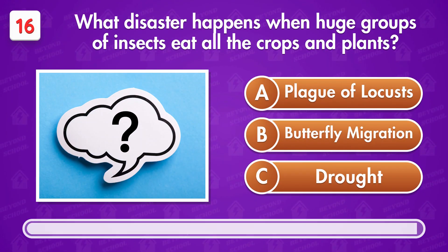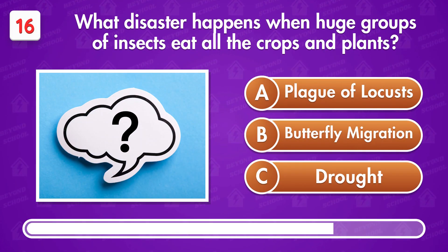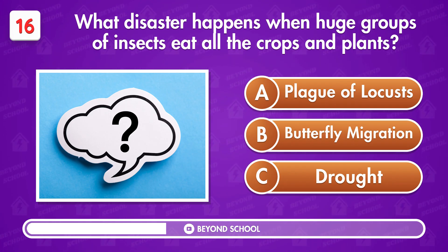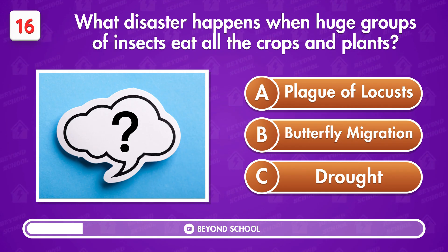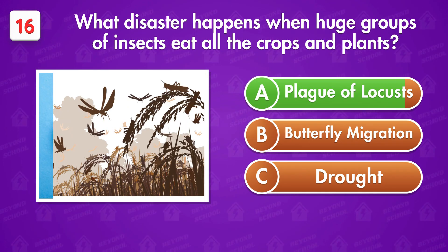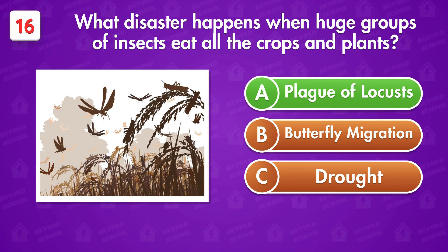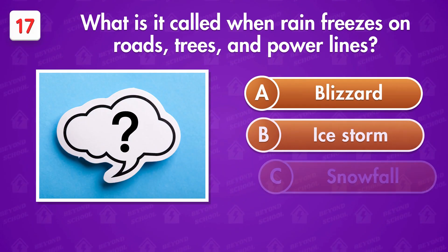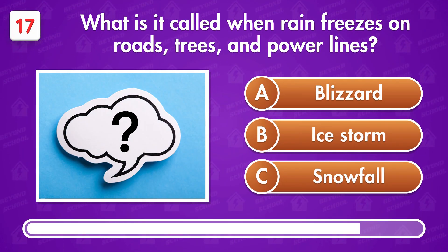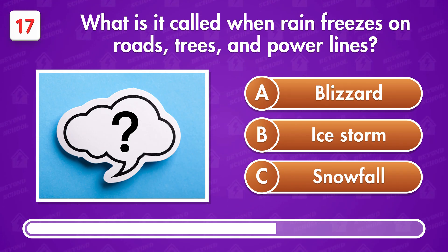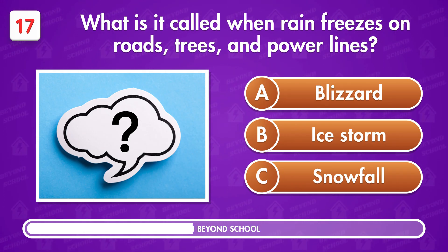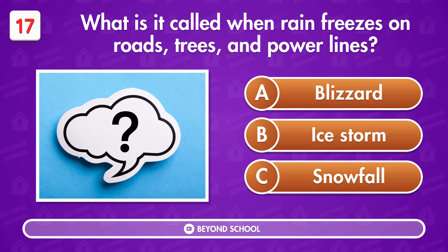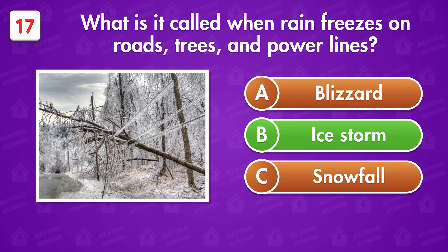What disaster happens when huge groups of insects eat all the crops and plants? Plague of locusts. What is it called when rain freezes on roads, trees, and power lines? Option B — Ice storm.